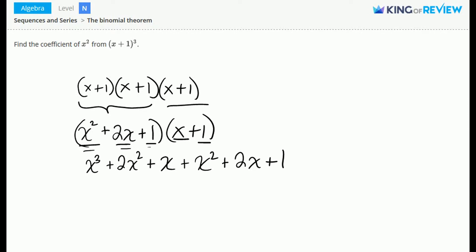And now we'll combine like terms. We get x³ + 3x² + 3x + 1. So this is the simplified form here.